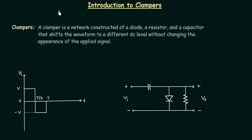From this lecture we will start clampers. In clippers we saw various diode configurations that clipped off a portion of the input waveform without changing the remaining part of the waveform. Now we will study different diode configurations that shift the applied signal to a different level. Clampers are the networks that shift the applied signal to a different level, whereas clippers are the networks that clip off a portion of the input waveform.